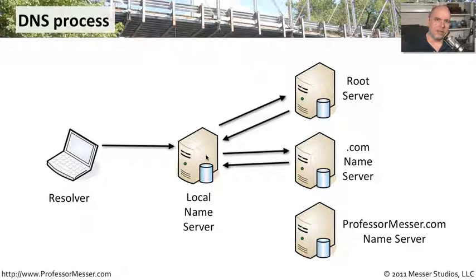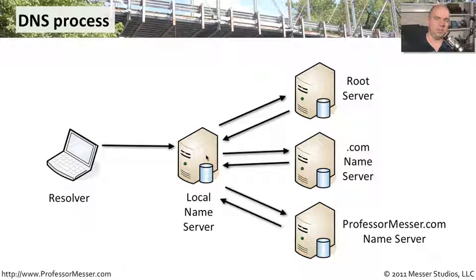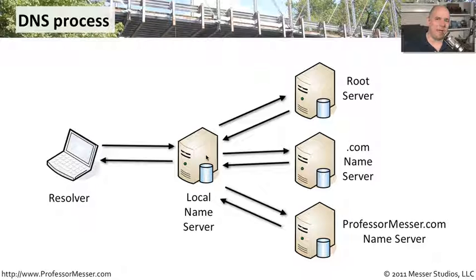Now getting further down the hierarchy, the local name server talks to the professormesser.com name server and asks if it knows how to reach www.professormesser.com. That name server certainly knows how to do that and provides the IP address needed to access the web server. At that point, the answer is cached in the name server and sent back to the local machine, which can finally communicate directly to the professormesser.com web server.